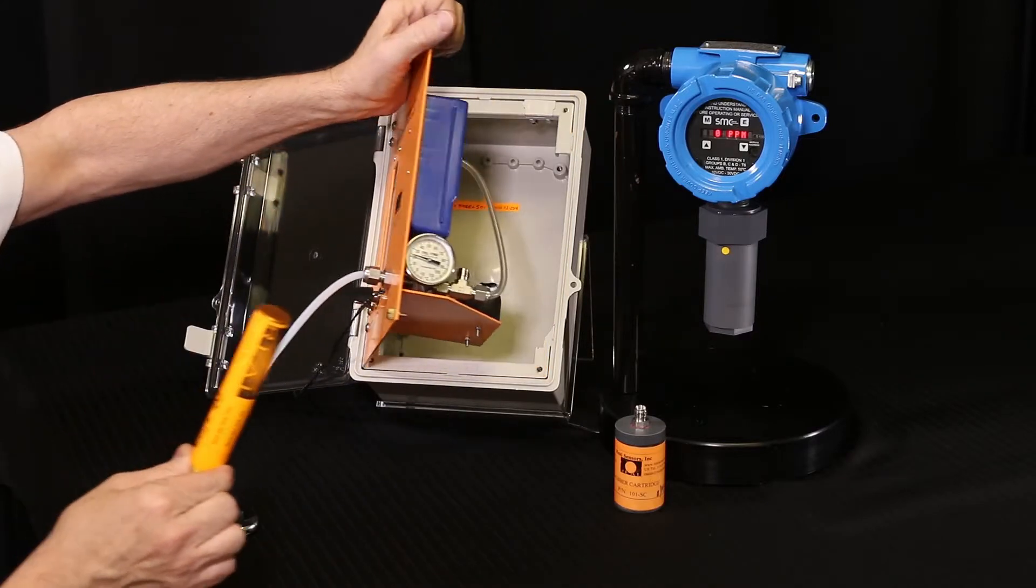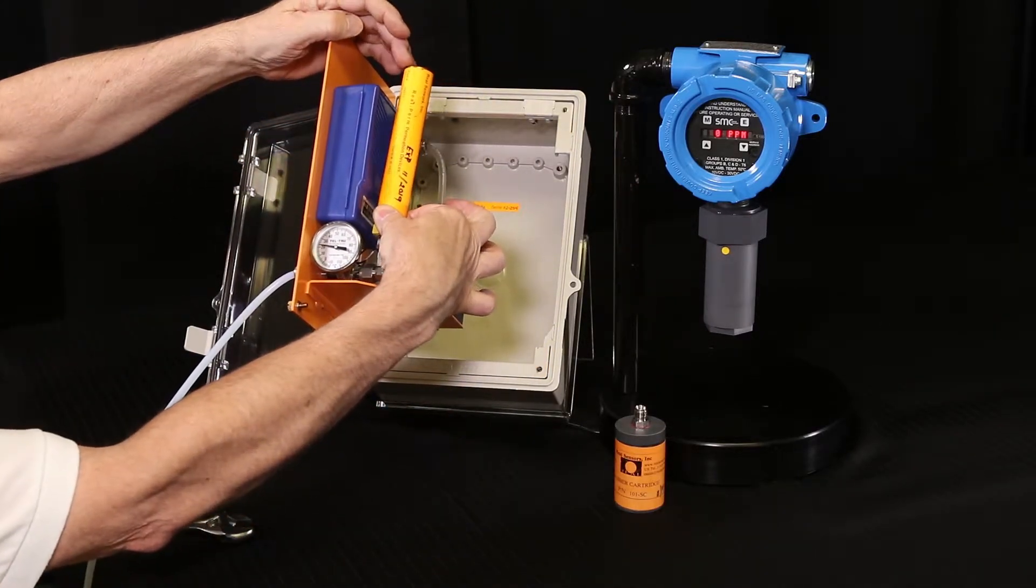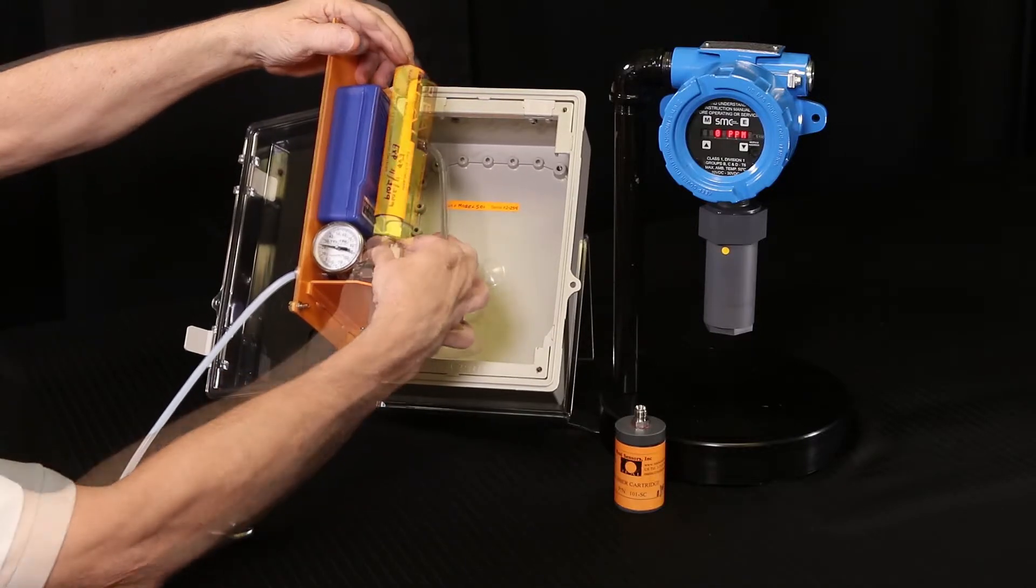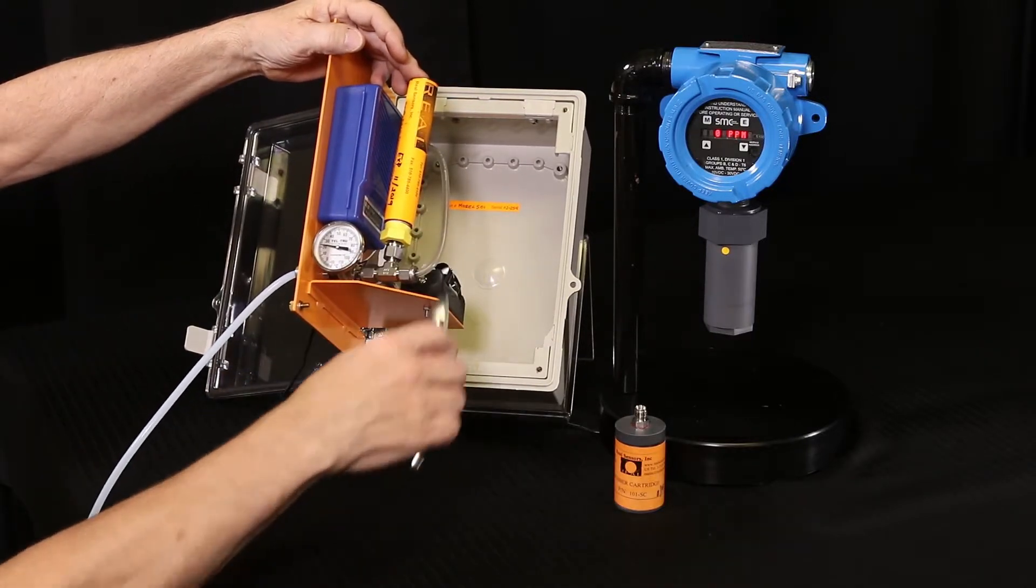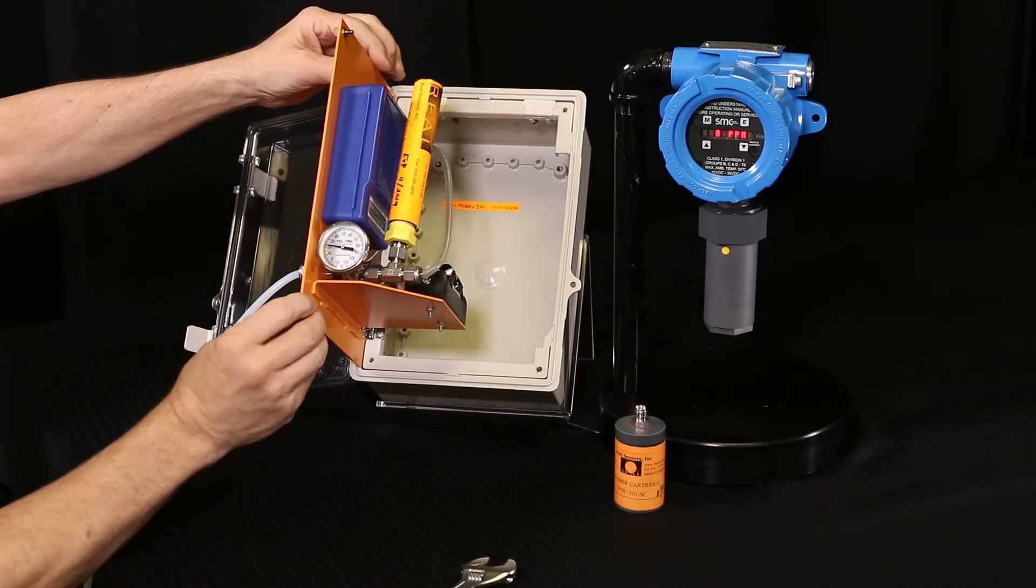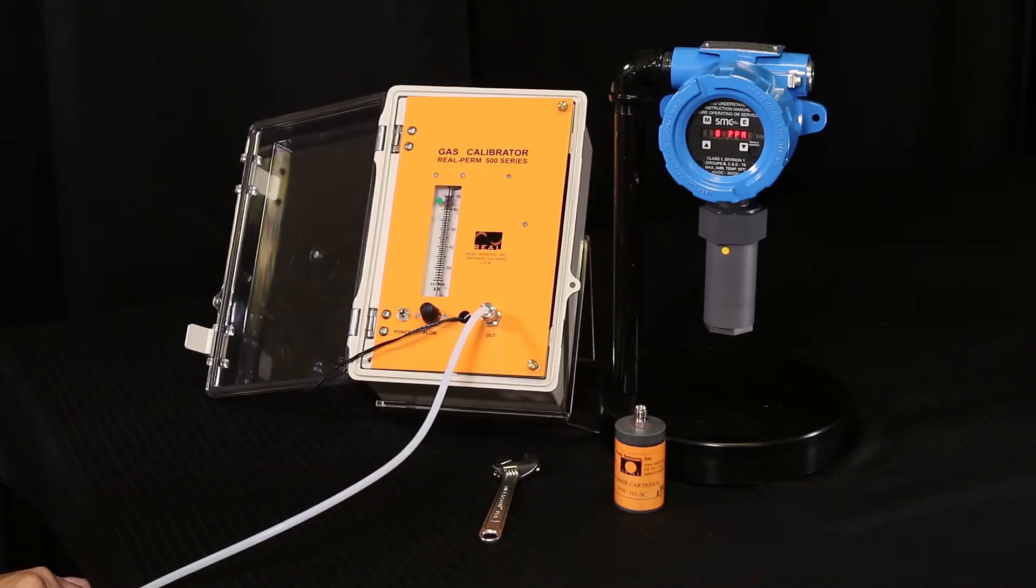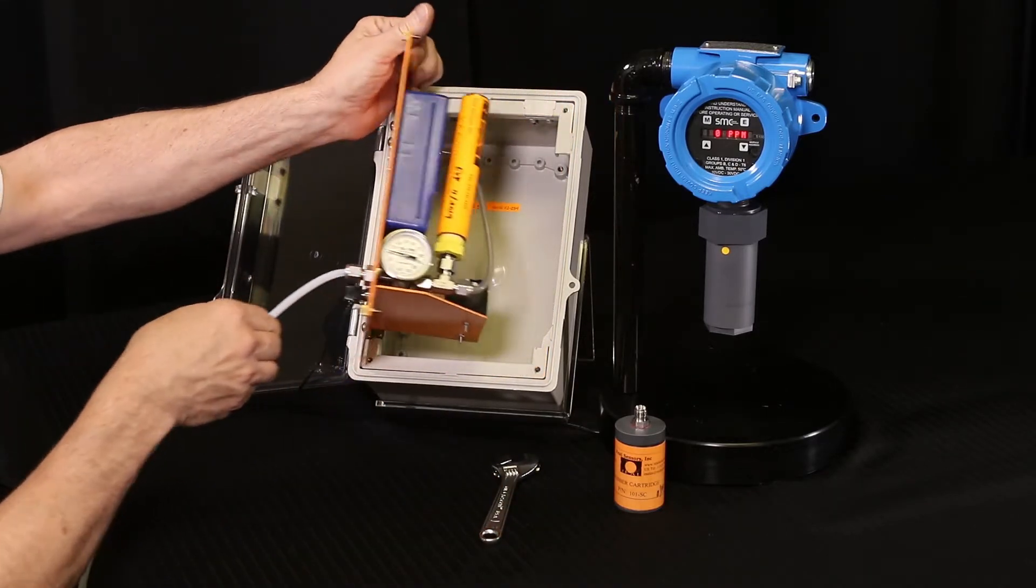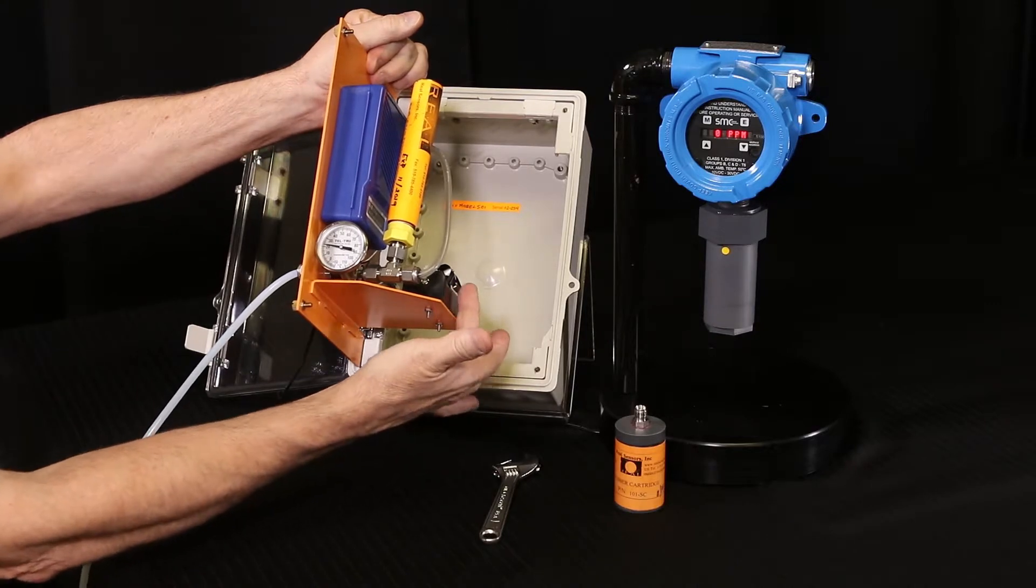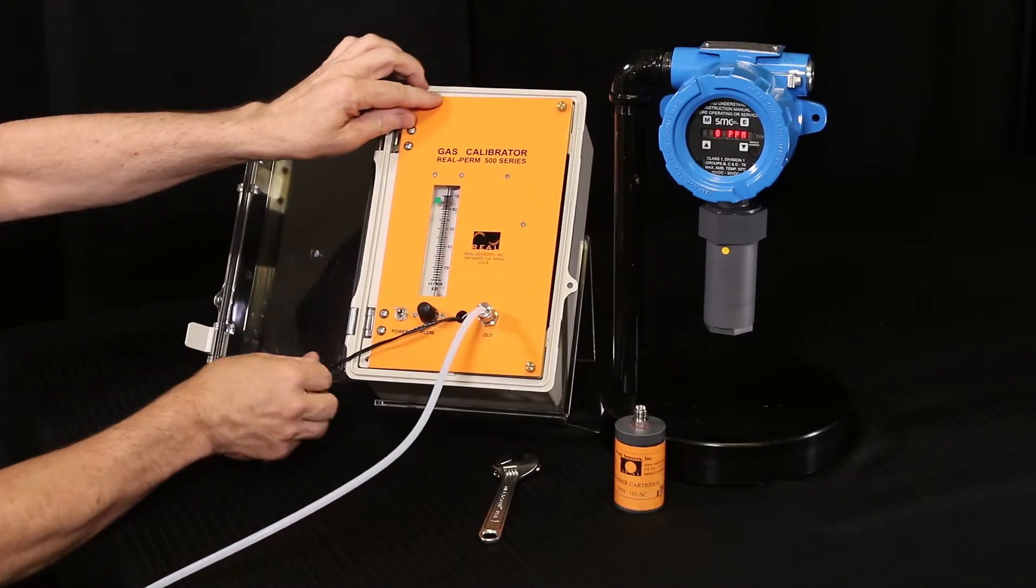First, install the tube into the quarter-inch tube T inside the calibrator enclosure using the 9/16 inch wrench. Tighten snugly. Next, verify that the D cell battery for the pump is installed and operational. Replace if needed. Please note that the unit is used for demonstration and has the battery replaced with a power supply.